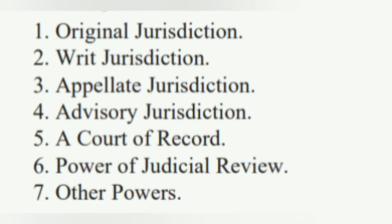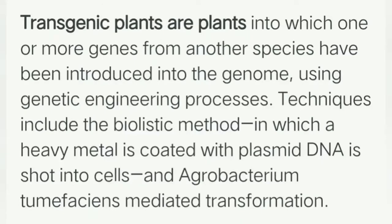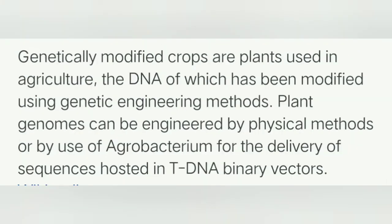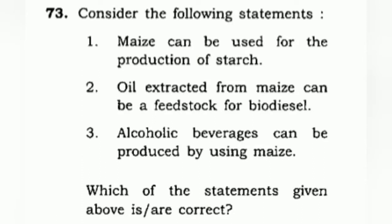Consider the following techniques: budding and grafting in fruit plants, cytoplasmic male sterility, and gene silencing. Which of the above are used to create transgenic crops? Transgenic crops are plants into which one or more genes from other species have been introduced; they are also called genetically modified crops. Budding and grafting is a natural process, so option one is not correct. But options two and three — cytoplasmic male sterility and gene silencing — are used to create transgenic crops. The correct answer is B: two and three only.